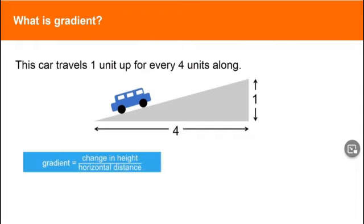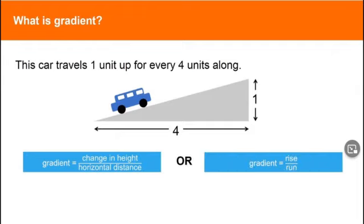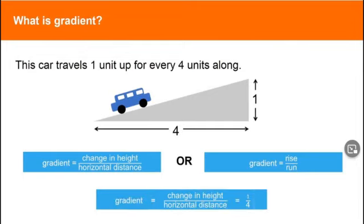The gradient is the change in height divided by the horizontal distance travelled. Some people call this rise over run. Here the gradient is the change in height which is one divided by the horizontal distance which is four. That's one divided by four or one quarter.